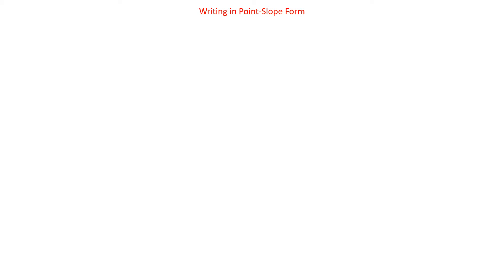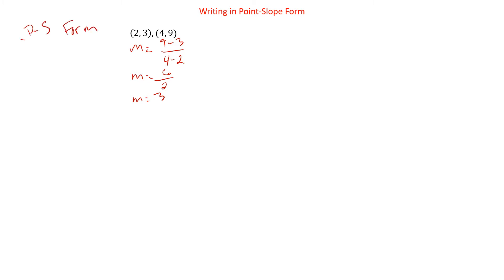Writing in point-slope form: if we have two points, that's one way — actually the hardest way. Sometimes they give you a slope and a point, and you just plug it into the equation. With two points, the very first thing we do is find the slope. Our slope is going to be y minus y, so let's go 9 minus 3 over x minus x, 4 minus 2. That's 6 over 2, which gives us a slope of 3. Now we take that and pick either of our two points to go into point-slope form.